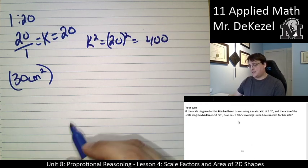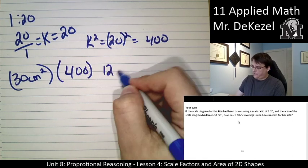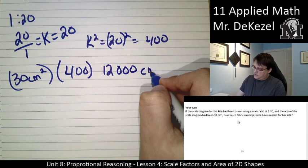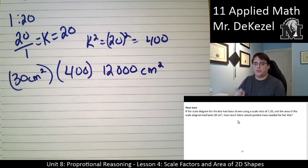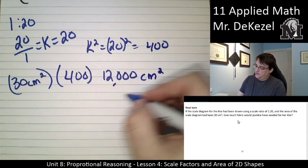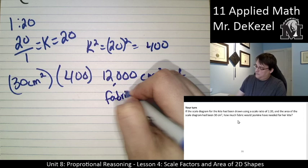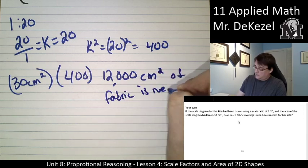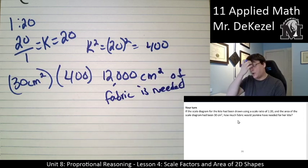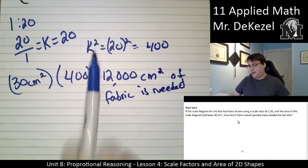So we're scaling this up by 400 this time. So 30 times 400 would be 12,000 centimeters squared. It's going to be a really large kite. That's how much fabric, 12,000 centimeters squared, is needed. We're making a record setting kite.